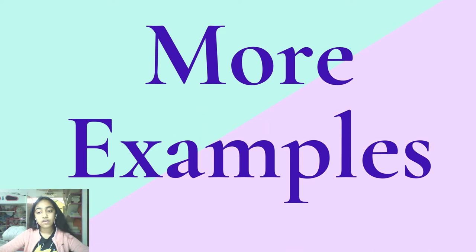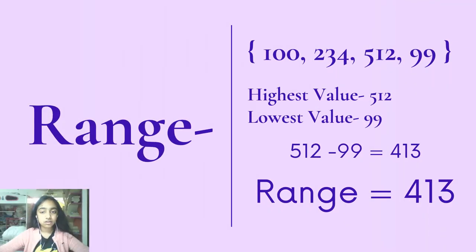A few more examples to make the concept clear. So we have another data set: 100, 234, 512, and 99. The highest value is 512, the lowest value is 99, so 512 minus 99 is 413. The range of this data set is 413.